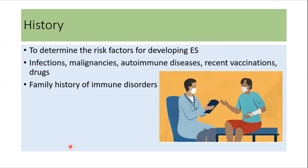For diagnosis, history is very important. A detailed history should be taken to determine risk factors for developing Evans syndrome, including history of infections, malignancies, autoimmune diseases, recent vaccinations, recent drug use, and family history of immune disorders. These histories will help rule out secondary causes of Evans syndrome.